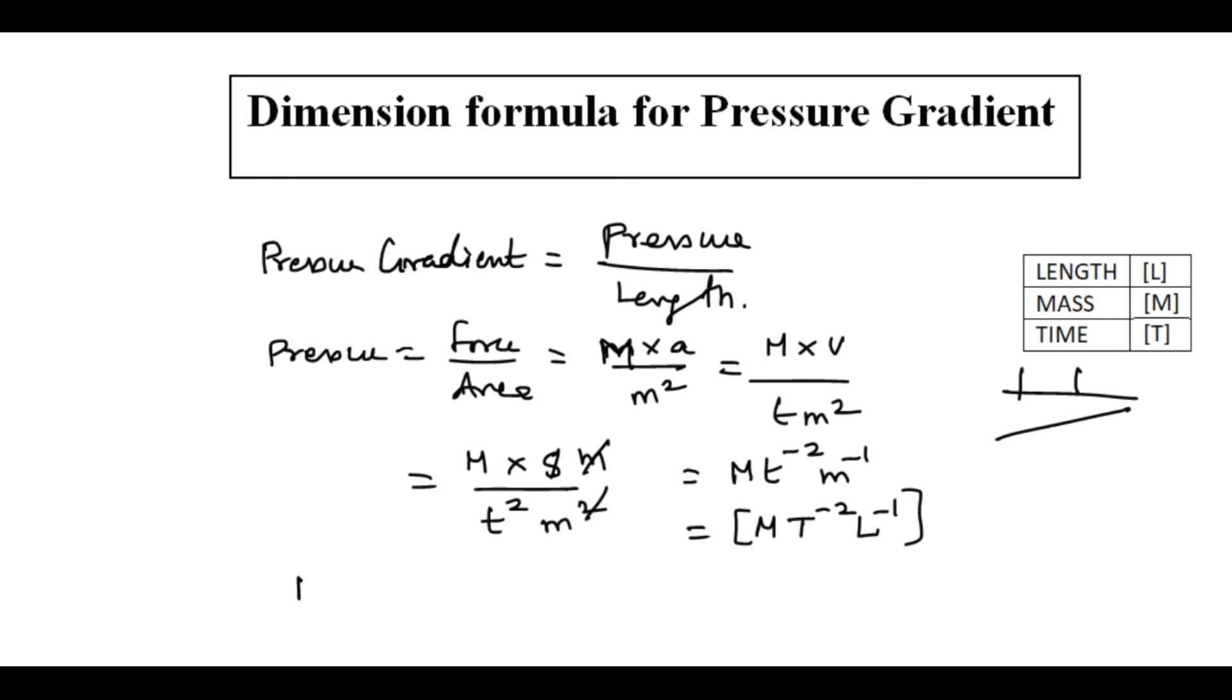Now we calculate the pressure gradient. Pressure gradient equals pressure by length, so m t power minus 2, l power minus 1, divided by l.